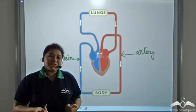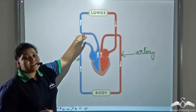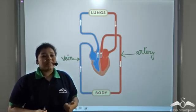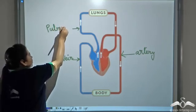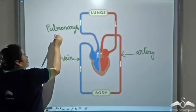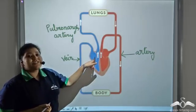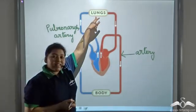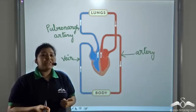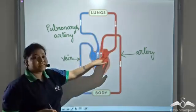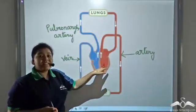Now it is very interesting to know that this vessel stemming out from the heart is an artery, but it is the only artery in the body that carries deoxygenated blood. This artery is known as the pulmonary artery. The pulmonary artery carries deoxygenated blood from the heart to the lungs. In the lungs, this deoxygenated blood changes to oxygenated blood, and this oxygenated blood from the lungs is carried back by vessels to the heart.